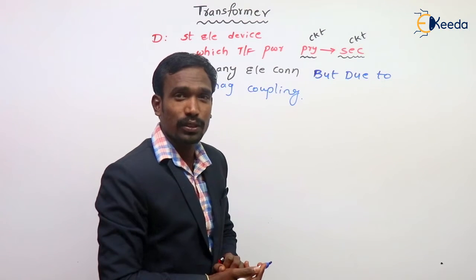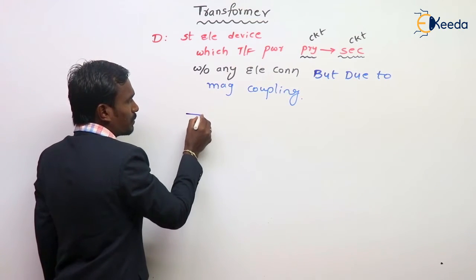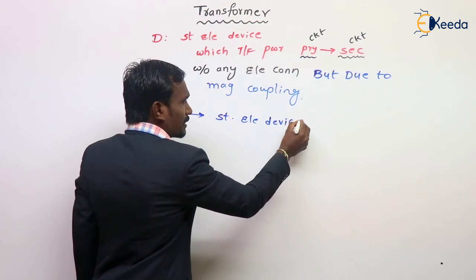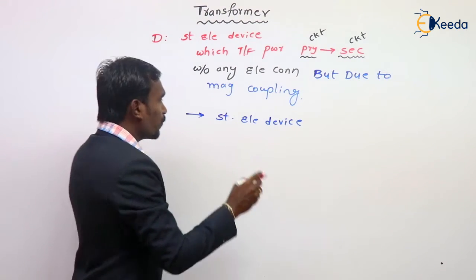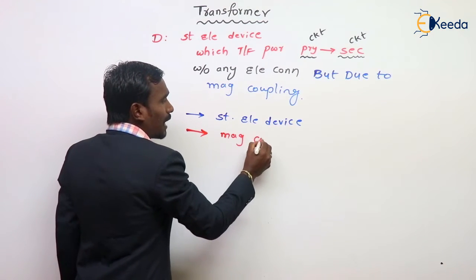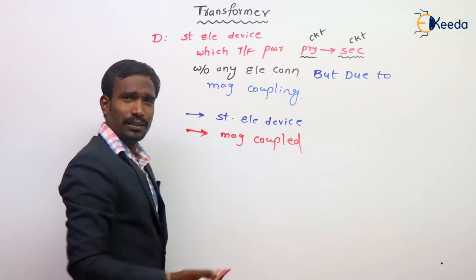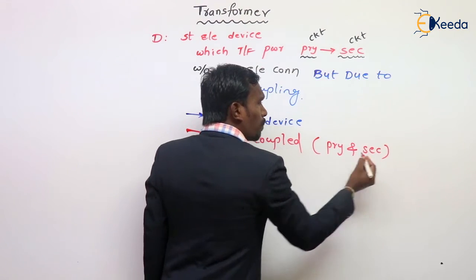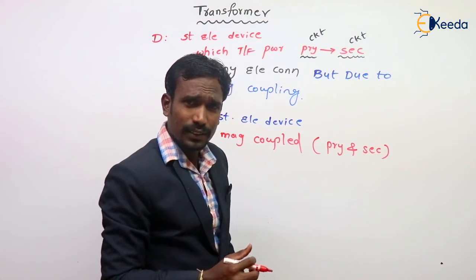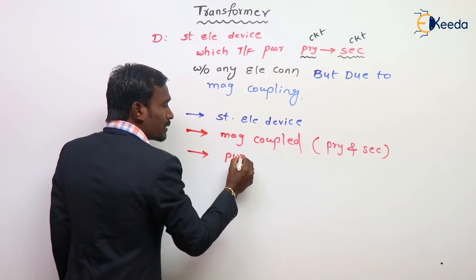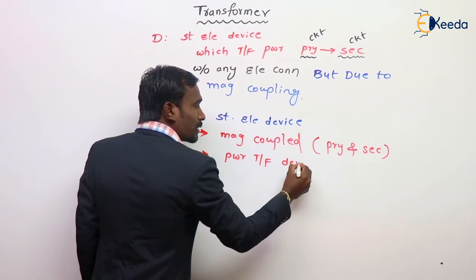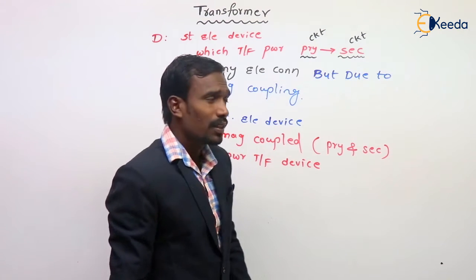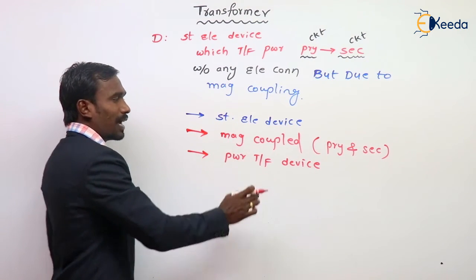We can give many points about transformer from this definition. First point: transformer is a static electrical device. Second: transformer is a magnetically coupled device — the primary winding and the secondary winding are magnetically coupled to each other. Third: transformer is a power transferring device, because the power is transferred from primary to secondary.